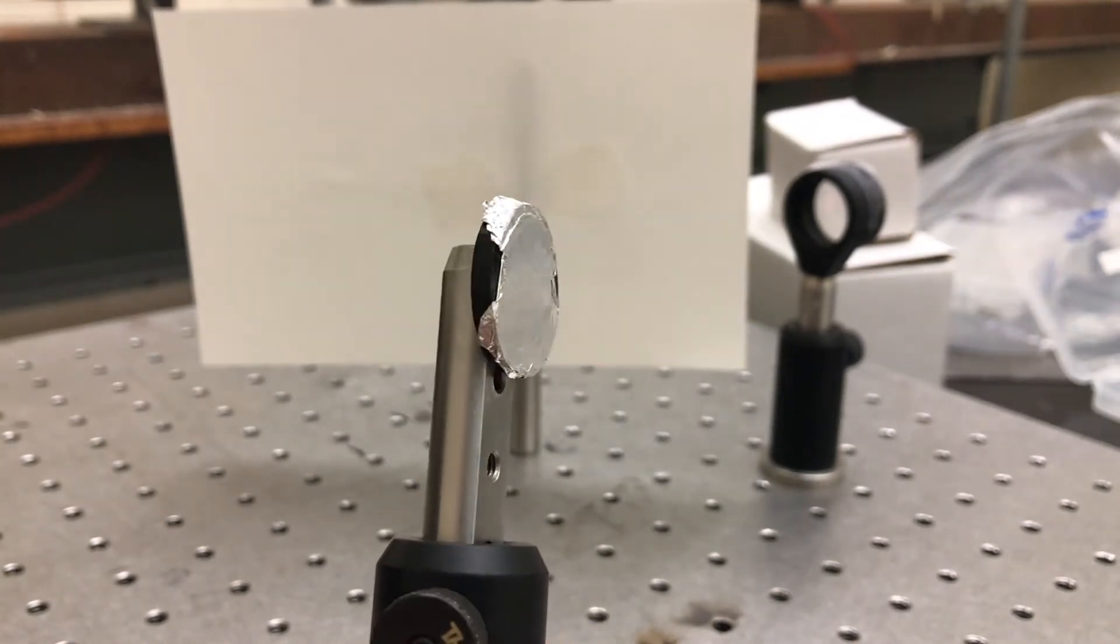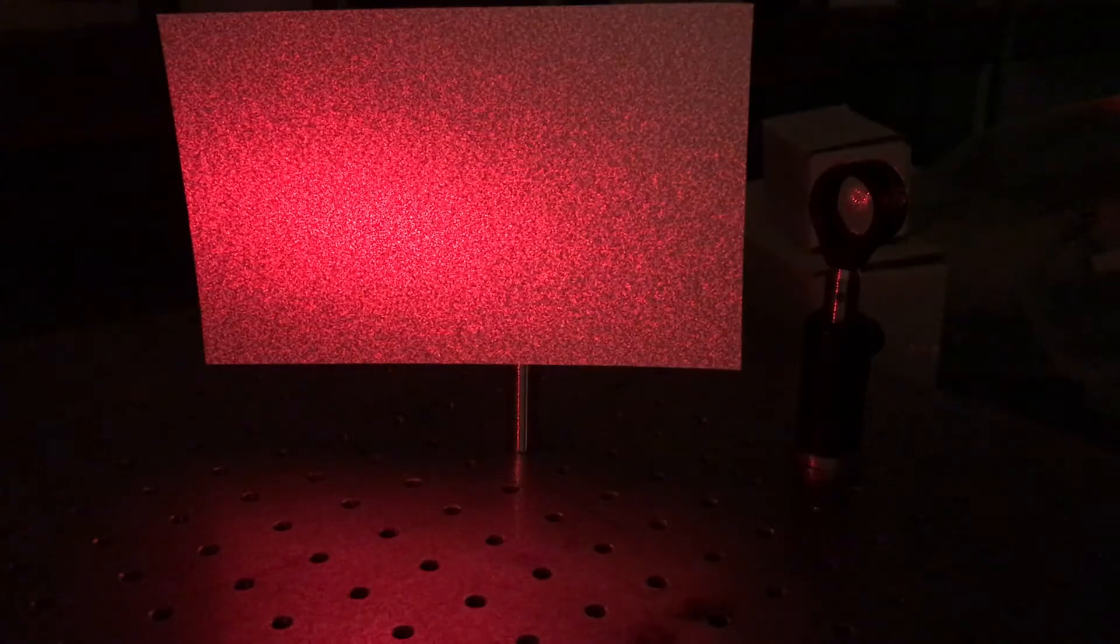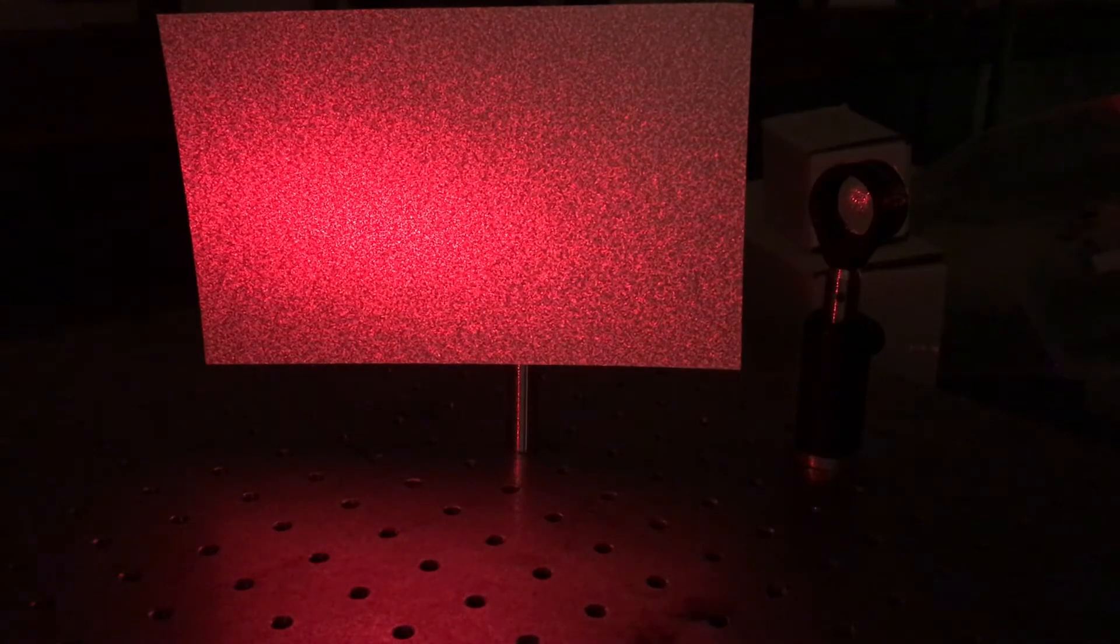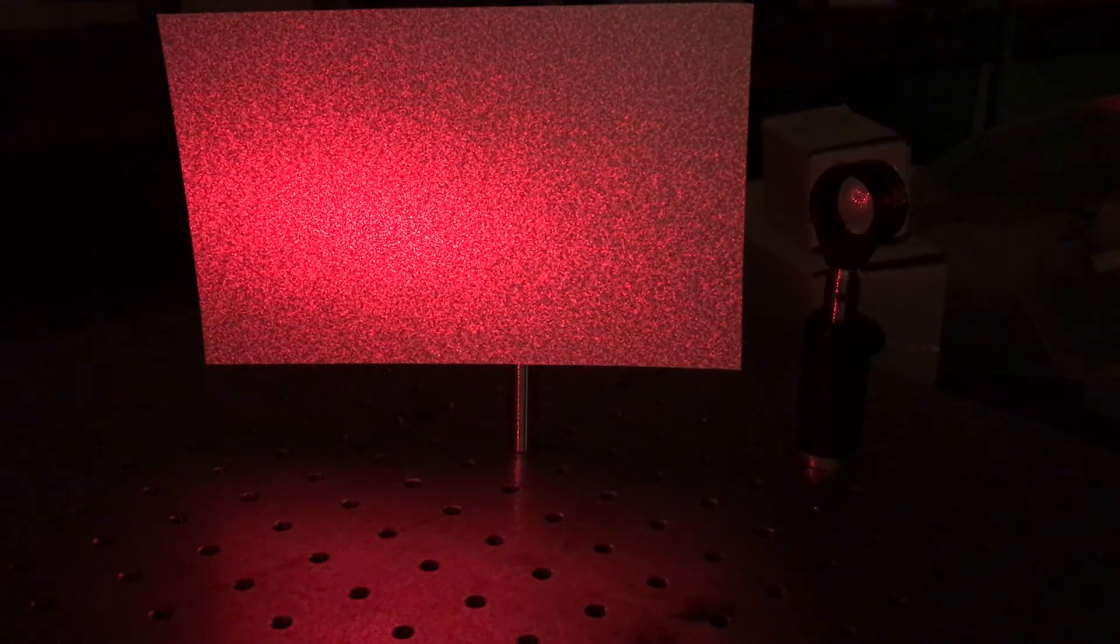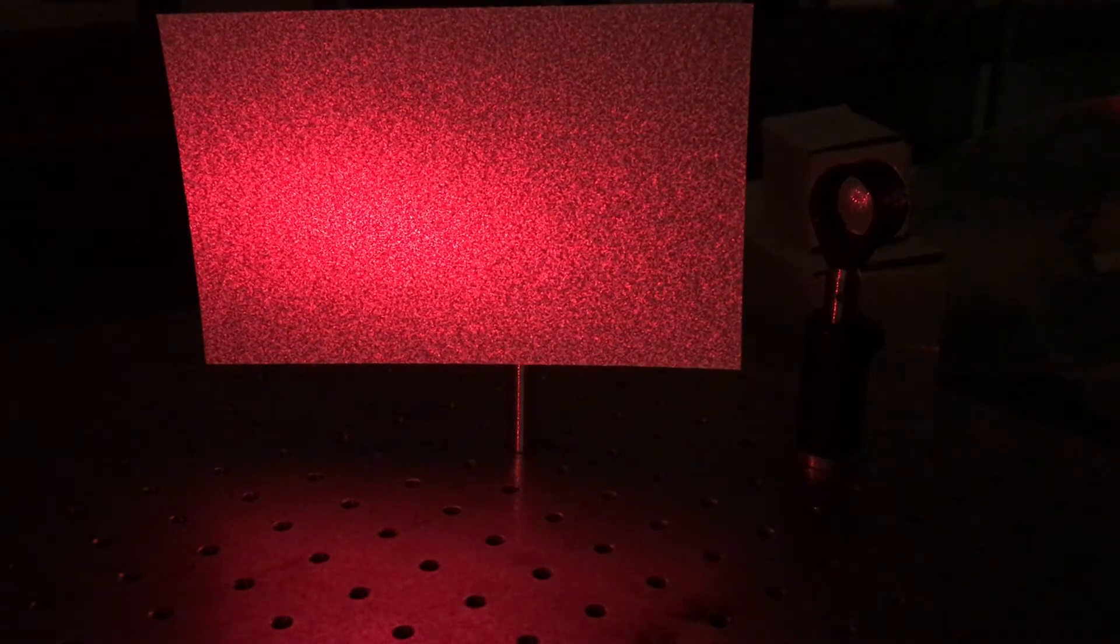It's the roughness that gives the speckle pattern interference. It's a little bit like the interference pattern that you get from two slits. If the two slits are far apart, then the fringes that you get are close together. If the two slits are close together, the fringes that you get are far apart.